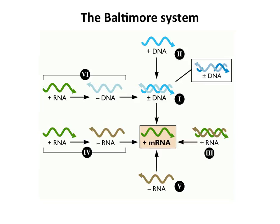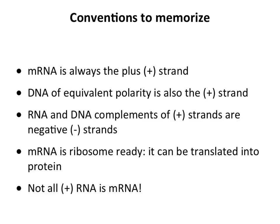There are some conventions you need to know. Perhaps the only non-intuitive one is that mRNA is defined as the plus strand — that's just a convention assigned years ago, so you'll have to remember it. mRNA is always the plus strand; for a double-stranded DNA molecule, the strand with the same polarity as mRNA is the plus strand, and its complement is the minus strand. It has nothing to do with electrical charge — they could have used alpha and beta, but they settled on plus and minus. The definition of mRNA is that it's ready to be translated by a ribosome.